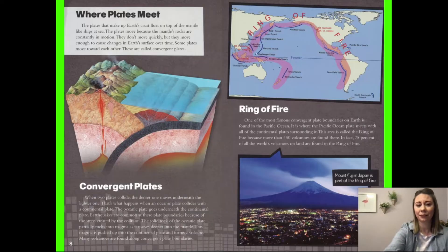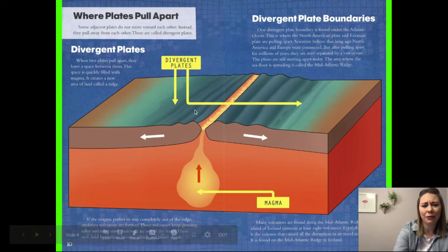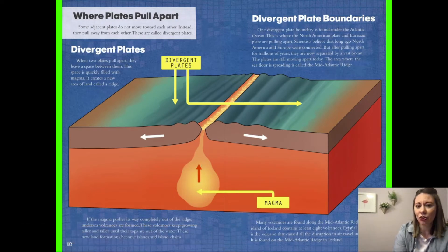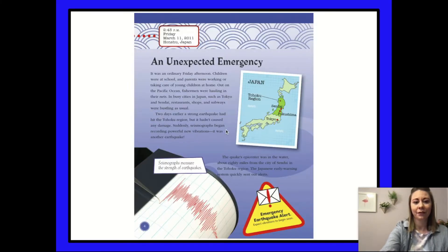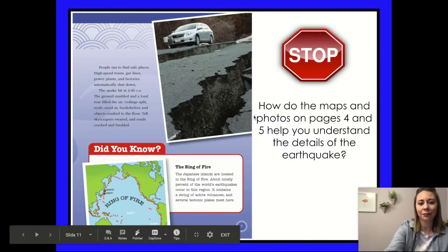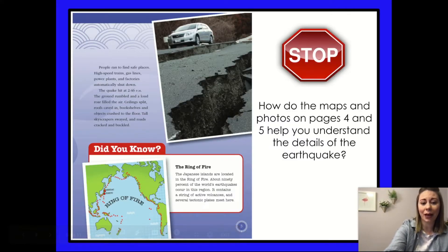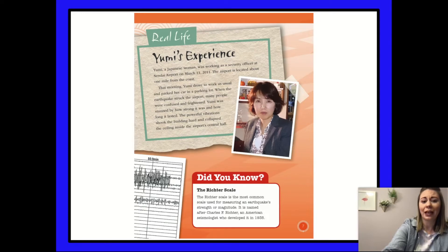Let's look back at our texts. This is Anatomy of a Volcanic Eruption — we can see it's telling where the plates meet, convergent plates, the ring of fire. There are diagrams, maps, and photographs. More diagrams talking about the topic. It looks very informational and gives lots of information about volcanic eruptions. And then this is A Tsunami Unfolds. Again, it seems to be informational — we have a picture of a seismograph, a map, photographs, and more maps with information about Japan's biggest earthquake.